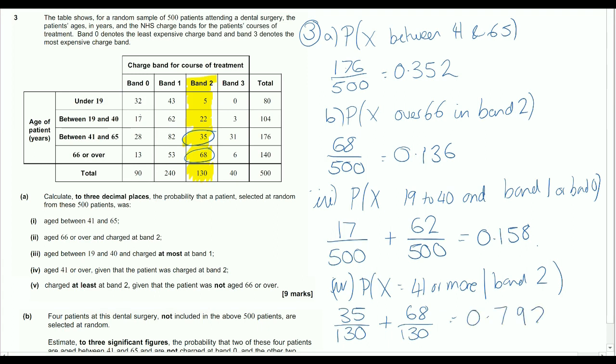Which comes down to 0.792. So the vast majority, if they're in band 2, they are 41 or over.